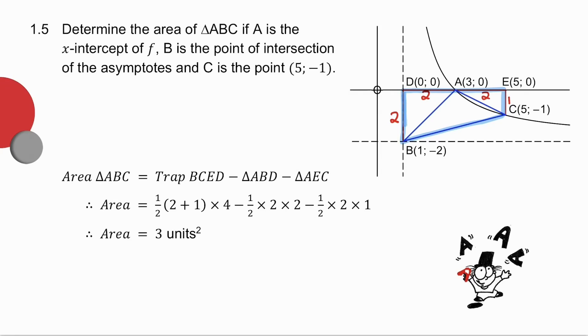So the trapezium, it's half two plus one times by four. So there's my trapezium. This triangle, half base times height. And if I work that out, I get the area to be three units squared.